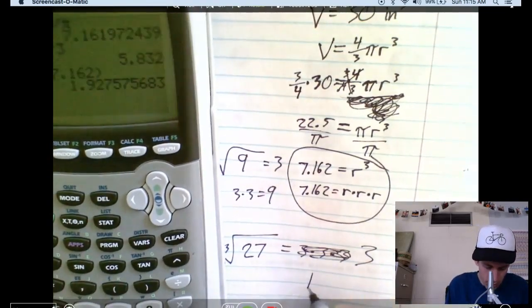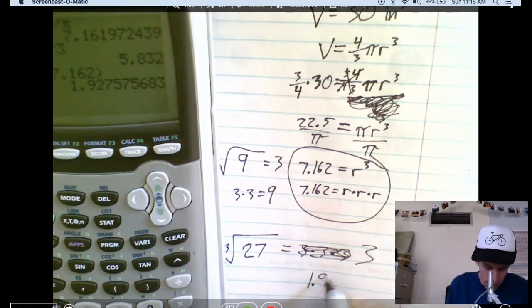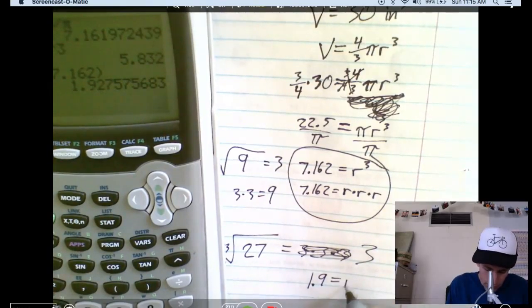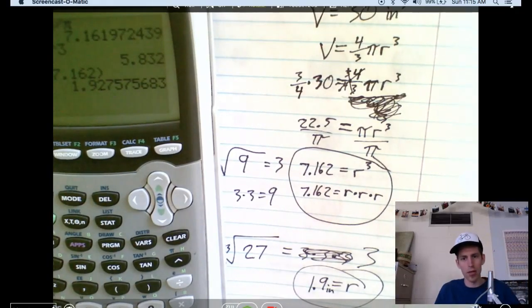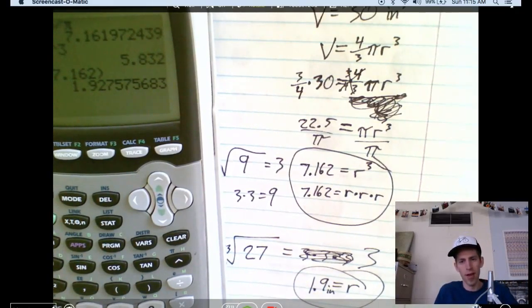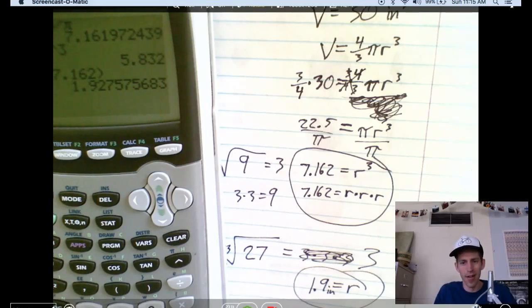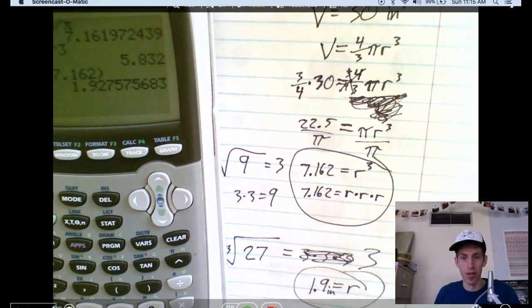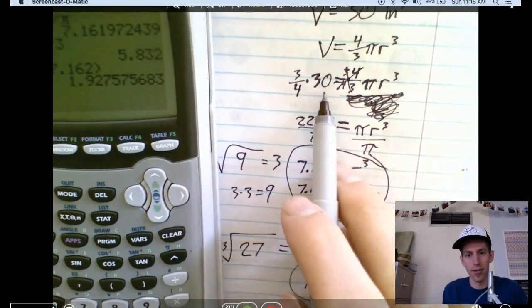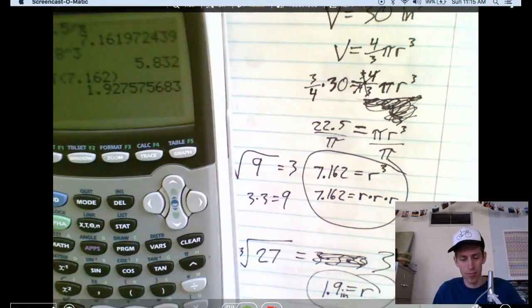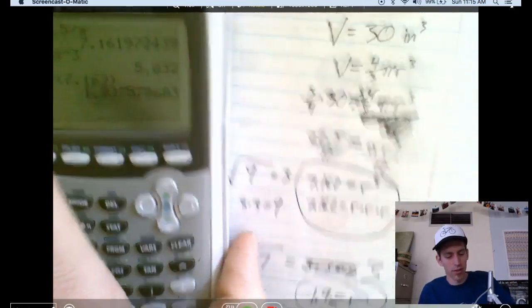So, let's round that to 1.9. 1.9 is the radius. 1.9 inches is the radius of Humpty Dumpty's head. That would be a very small head, wouldn't it? So, apparently, normal people's heads are way bigger than 30 inches, 30 cubic inches of volume.